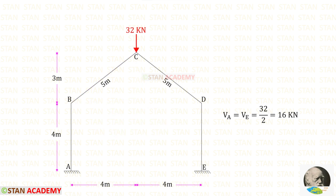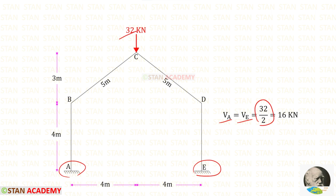Since there is no member load in this frame, all fixed end moments will be zero. Because the frame and loading are both symmetrical, we can easily find the vertical reactions at A and E: 32 divided by 2 gives vertical reactions VA and VE, each equal to 16 kN.